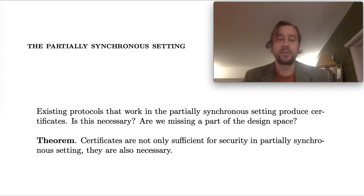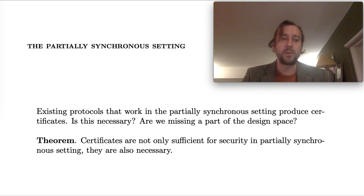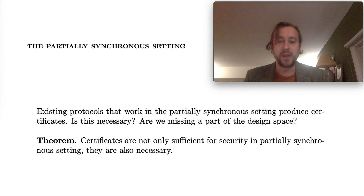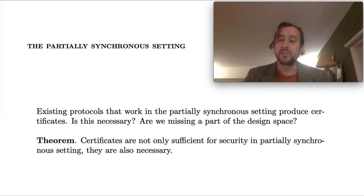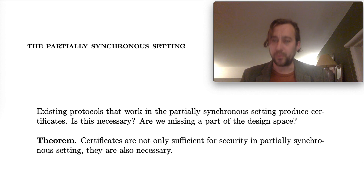It's intuitively obvious that Bitcoin isn't secure in a partially synchronous setting — if the two sides of a partition continue to grow, obviously the shorter one will be thrown out once the partition ends. But the point is that this isn't specific to Bitcoin or even to longest-chain protocols; it's driven fundamentally by the proof-of-work approach to Sybil resistance. Certificates are a sufficient condition for security in the partially synchronous setting, and they're the method by which Algorand, Tendermint, and all protocols we know that work in the partially synchronous setting achieve security. More importantly, the next theorem says certificates are not only sufficient but also necessary for security in the partially synchronous setting. So our new definition allows us to succinctly state what protocols secure in the partially synchronous setting have to look like: unsized protocols won't work, and all sized protocols that work will produce certificates.